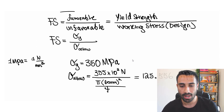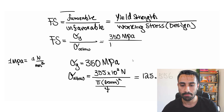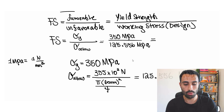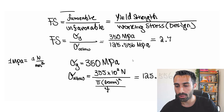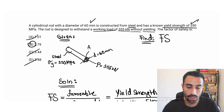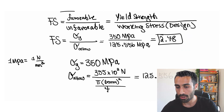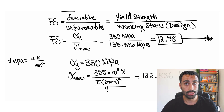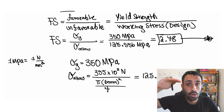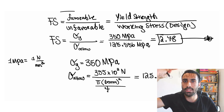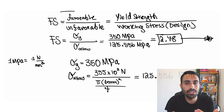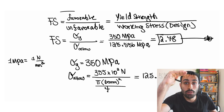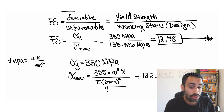Now we can plug back in for the factor of safety. Sigma Y is 350 MPa divided by sigma allowable of 125.556 MPa. Taking 350 divided by 125.556 gives approximately 2.78. From the answer choices, that should be answer B — a factor of safety of 2.78. The allowable stress is well below the yield stress, which is exactly what we want.